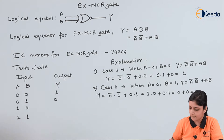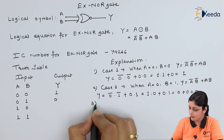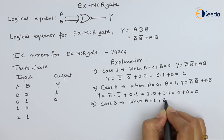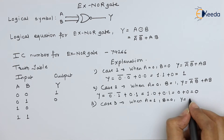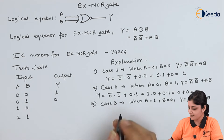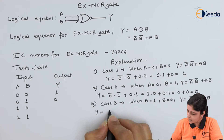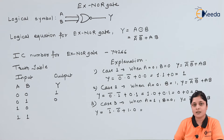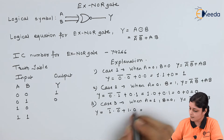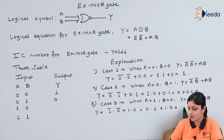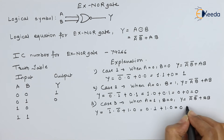Case 3: when A equals 1 and B equals 0, Y equals Ā·B̄ + A·B. Substituting: 1̄·0̄ + 1·0. Solving: 1̄ is 0, and 0̄ is 1, so we get 0·1 + 1·0. That gives 0 + 0, so Y equals 0.